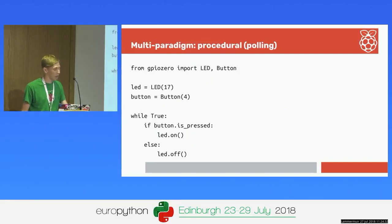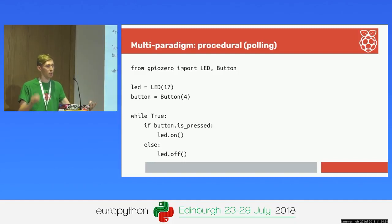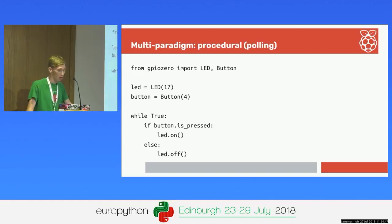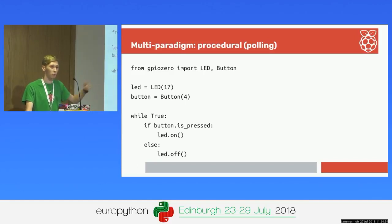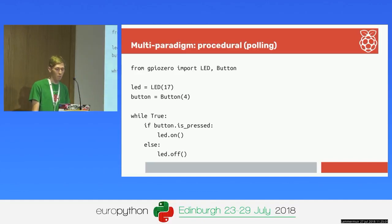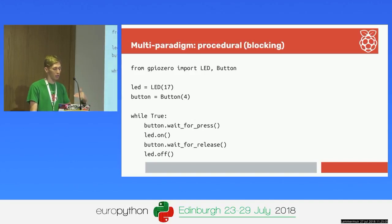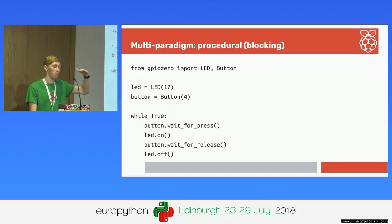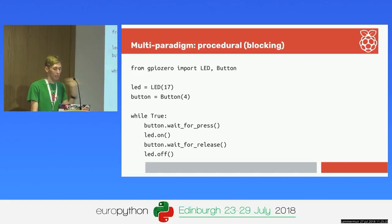Looking at the four main different paradigms: in the most basic sense, if you want an LED to light up when you press a button, a great way to introduce a beginner is to write a while loop with an if statement - if the button is pressed, turn the LED on, else turn it off. A slight variation is to use procedural with blocking - rather than continuously asking, you wait for the button to be pressed, which just blocks at that point, then turns the LED on, waits for it to be released and turns it off. You have a control flow rather than continually polling.